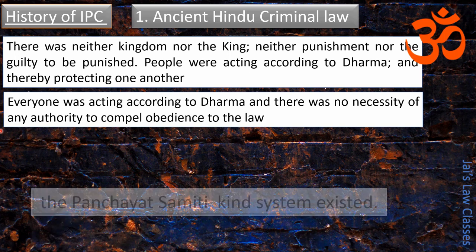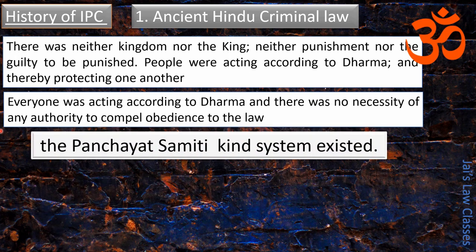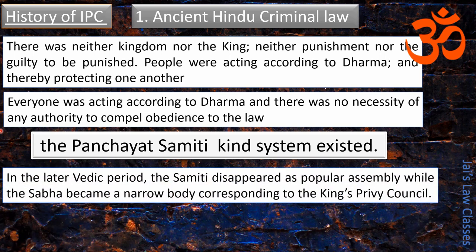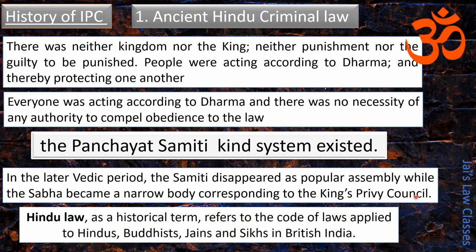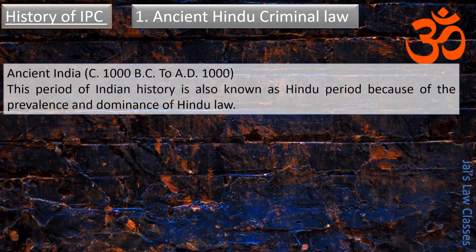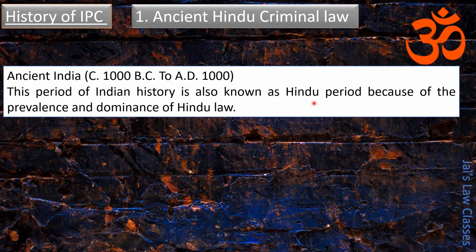Later, the Panchayat Samiti kind of system existed. In the later Vedic period, the Samiti disappeared as a popular assembly, while the Sabha became a narrow body corresponding to the king's privy council. When the Hindu law term is used as a historic term, it refers to the code of laws applied to the Hindus, Buddhists, Jains, and Sikhs in British India.